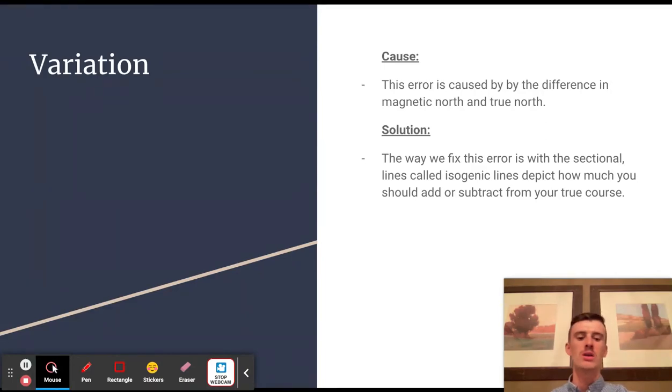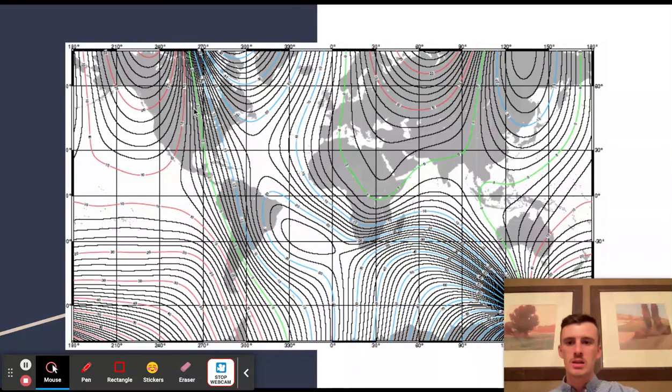Right where we are, you can see here in Oregon we're a little bit east, so we would subtract. We're right around 15 degrees east, so it's pretty strong, so we subtract 15.